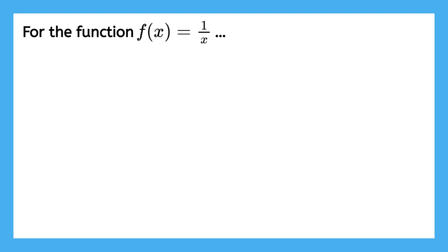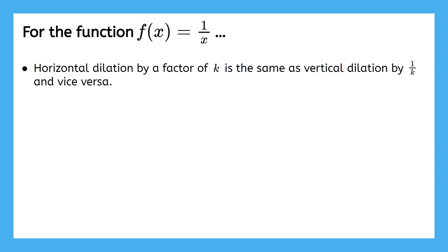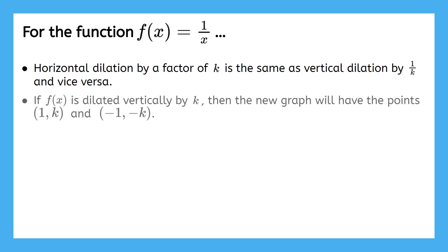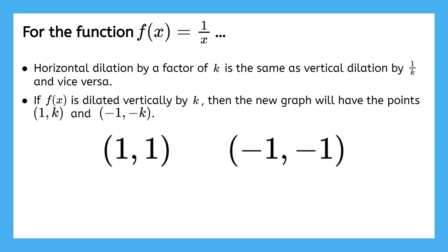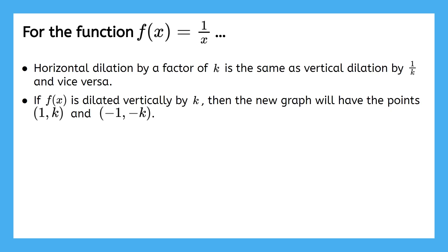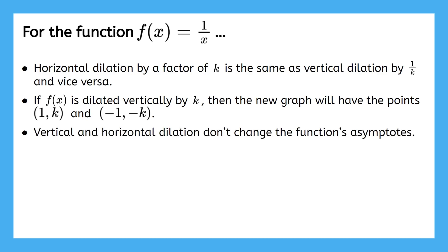Before we move on to examples, let's sum up what we just learned. We can list the properties of dilating one over x since these will be very useful when solving problems. First, a horizontal dilation by a factor of k is the same as a vertical dilation by a factor of one over k, and vice versa. Second, if f of x is dilated vertically by k, then the new graph will have the points one comma k and negative one comma negative k. And lastly, vertical and horizontal dilation don't change the function's asymptotes.